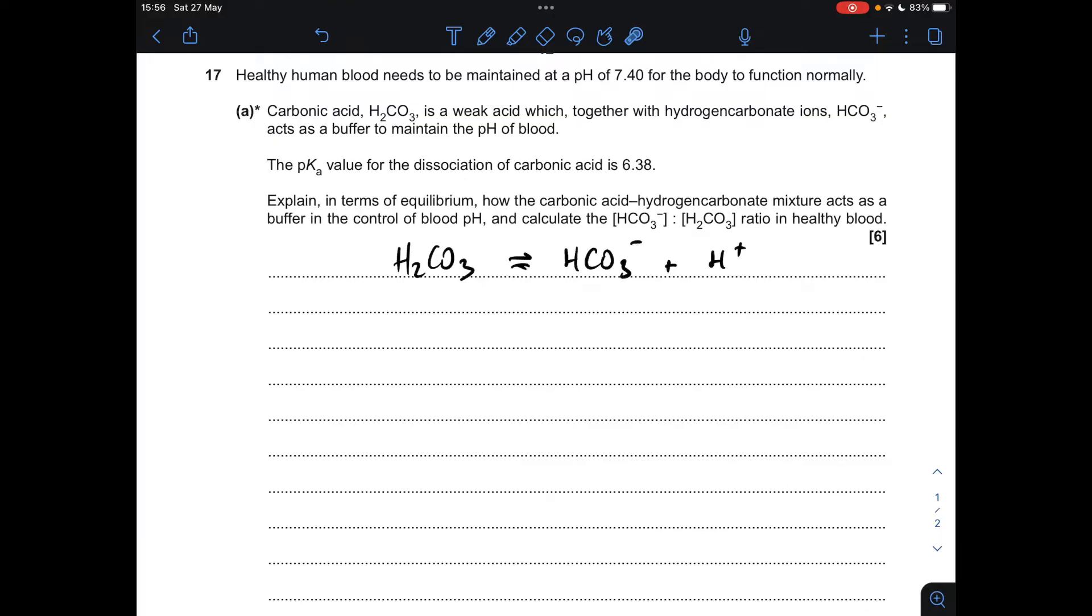We'll talk about what happens if acid goes into the blood first. When acid goes into blood, the H+ concentration will go up, which means that the salt ion present in the buffer will react with the excess H+ ions and send the equilibrium over to the left hand side.